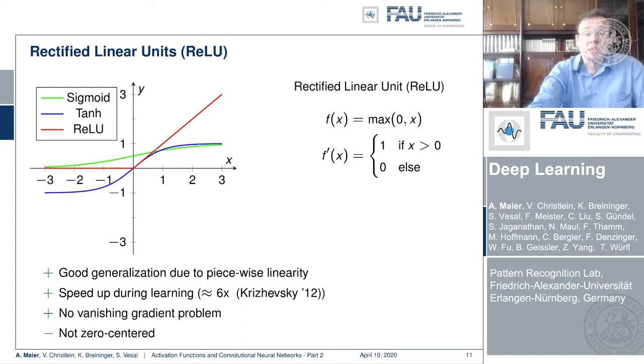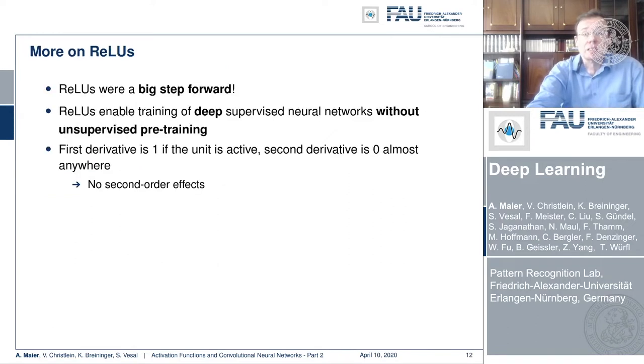The function can be evaluated very quickly because we don't need the exponential functions that are typically a bit slow on the implementation side. And we don't have this vanishing gradient problem because we have really large areas of high values for the derivative of this function. Still a drawback is it's not zero centered. This has not been solved with the rectified linear unit.